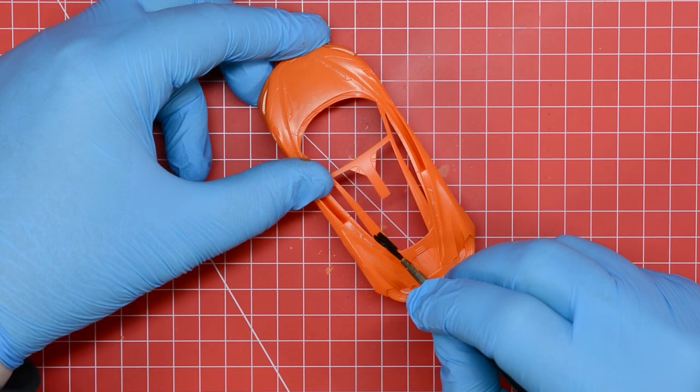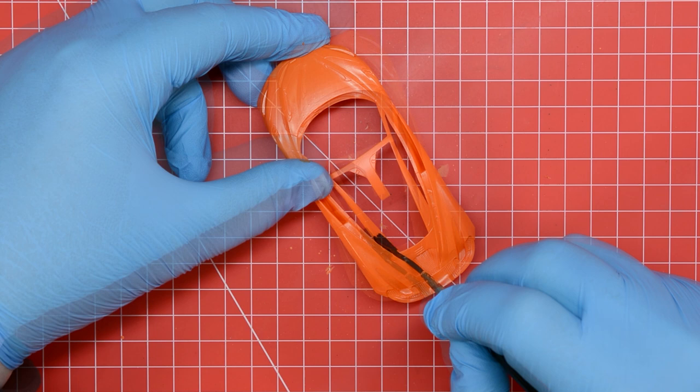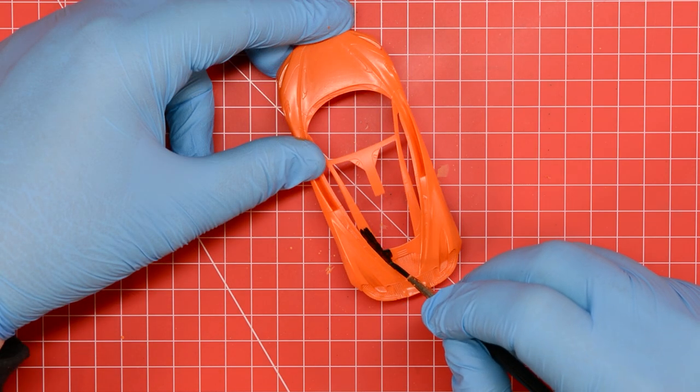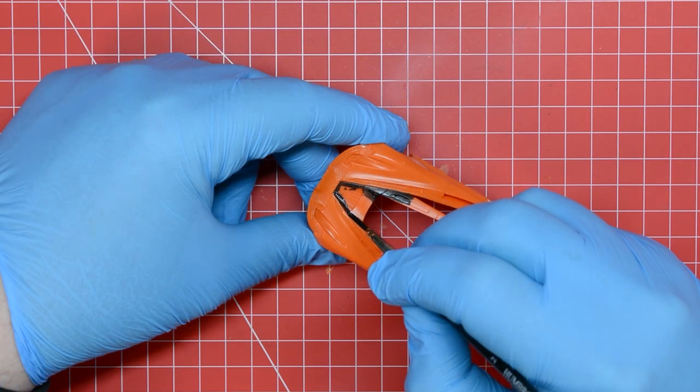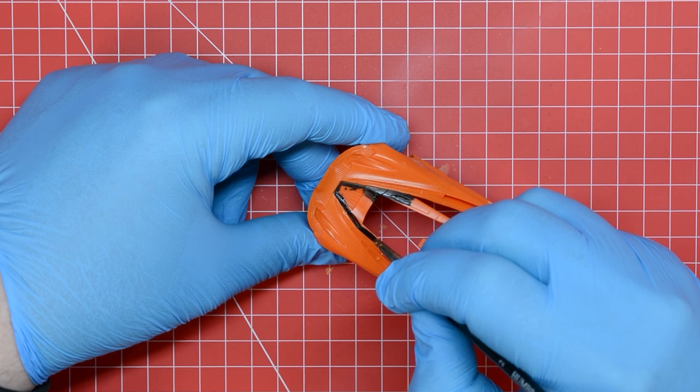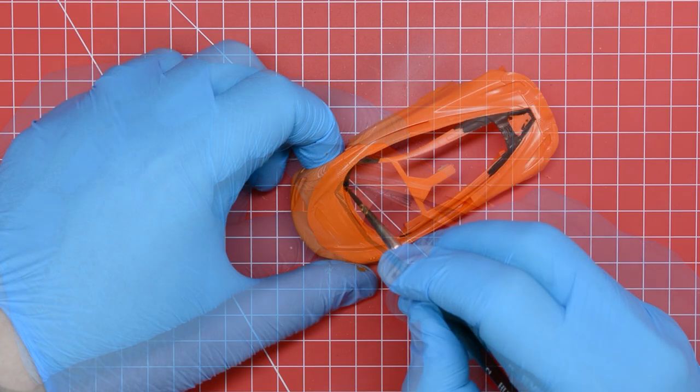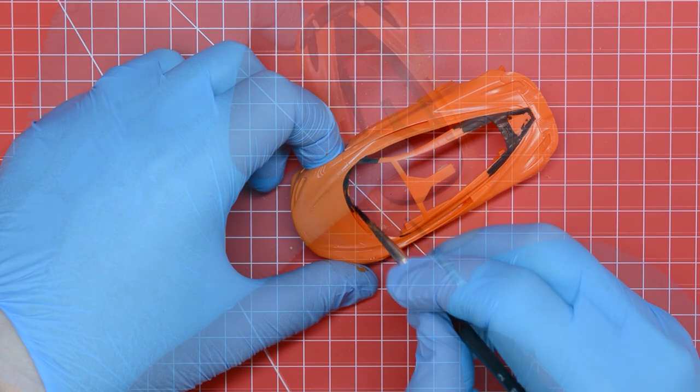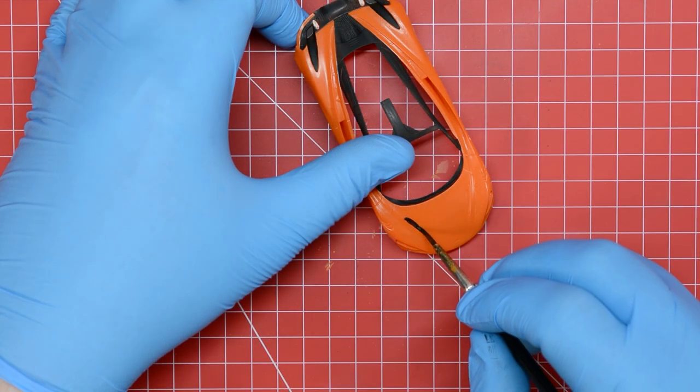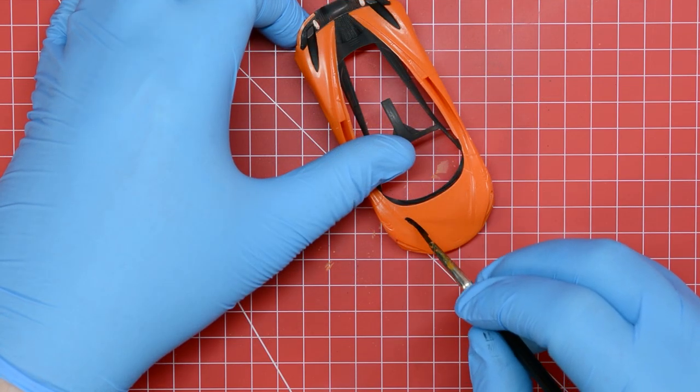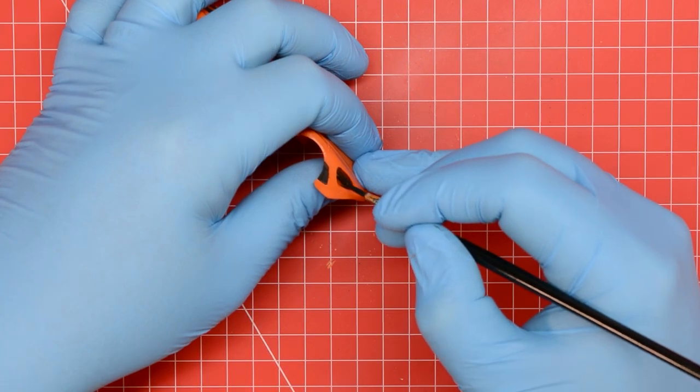Once the orange was dry it was time for the tricky part of the painting process which was to edge in all of the black areas with the matte black from the kit. There's no easy way to do this and the best thing is to get the brush to locate itself in the recessed details, and this will help guide the bristles around the details.